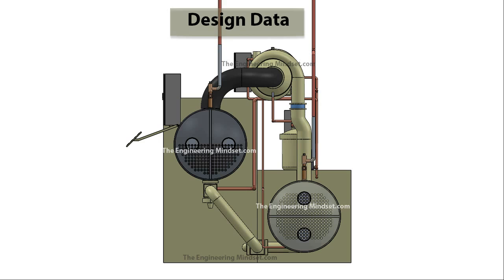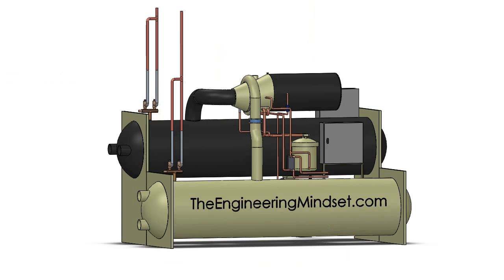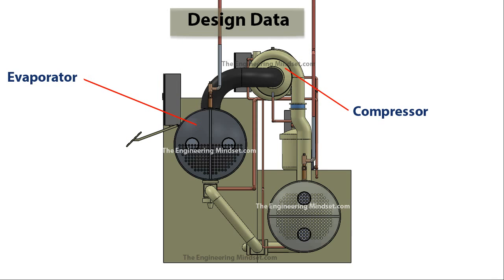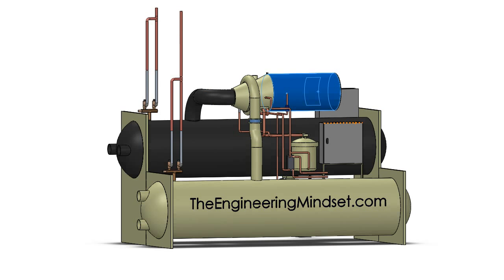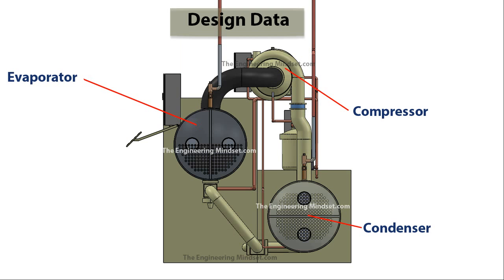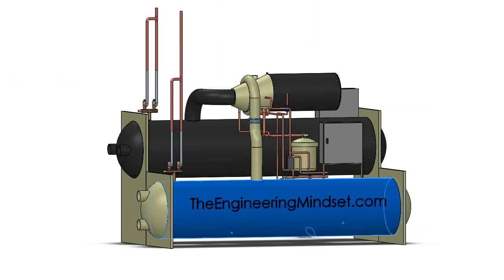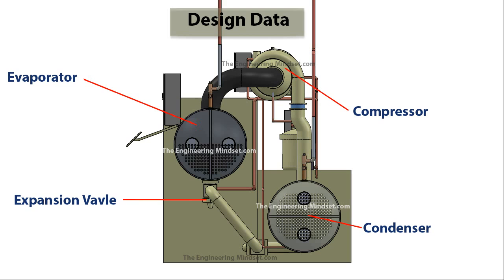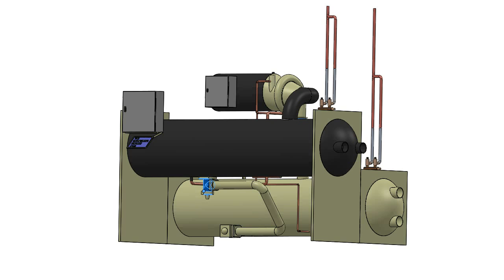If we switch over to the section view showing the side of the centrifugal chiller, let's go around and familiarize ourselves with the chiller components. This cylinder here is the evaporator. Next we've got the compressor located at the top. Then we've got the condenser located at the bottom, and the final main component is the expansion valve located just there at the back of the chiller.